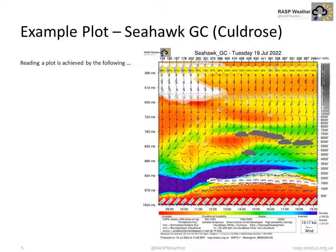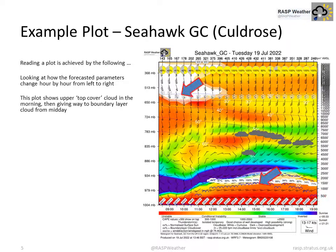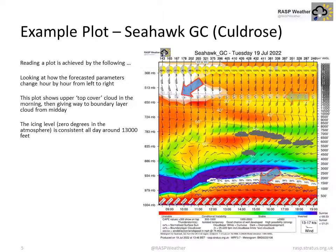Let's take an example — here we have Cool Droves. Reading a plot is achieved by looking at how the forecasted parameters change hour by hour from left to right. This plot shows top cloud in the morning, then giving way to boundary layer cloud from midday. The icing level — 0 degrees in the atmosphere — is consistent all day at around 13,000 feet.